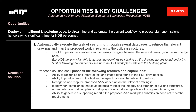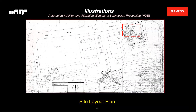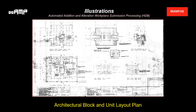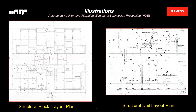The next few slides show the relevant plans that officers use to process ANA work. This slide shows the building project site layout plan — for this case there are two blocks in the project, and we'll highlight one of the blocks. The following slide shows the architectural block layout and unit layout plan. Then the structural layout plan for the whole block and the unit layout related to the application.